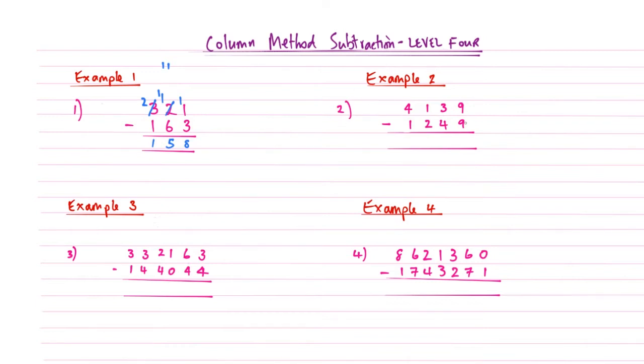Example number 2. So units column. 9 subtract 9. That's straightforward. That just becomes 0. Tens column. 3 subtract 4. We can't do that because it's lower. This reduces to a 0. That 1 now lives next to the 3. 13 take away 4. Well that gives me an answer of 9.